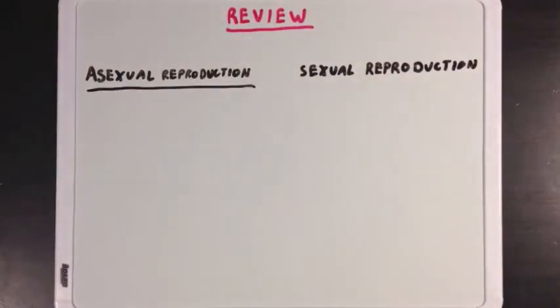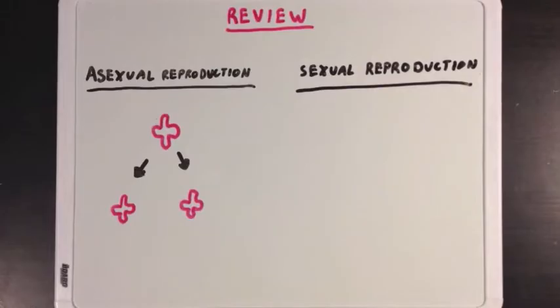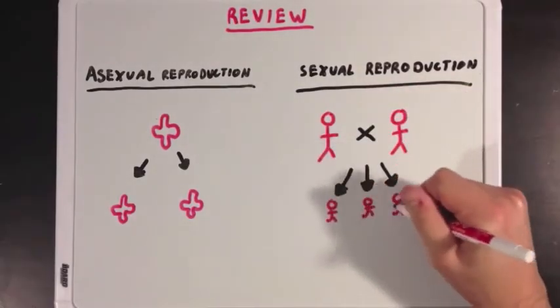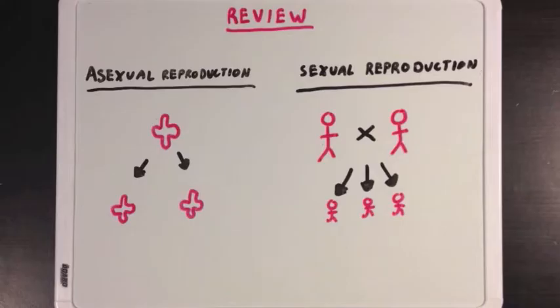In asexual reproduction, one organism, like a single bacterium, will divide into two daughter cells that are both genetically identical to the original cell. In sexual reproduction, two members of the same species will reproduce together in order to form genetically unique offspring.